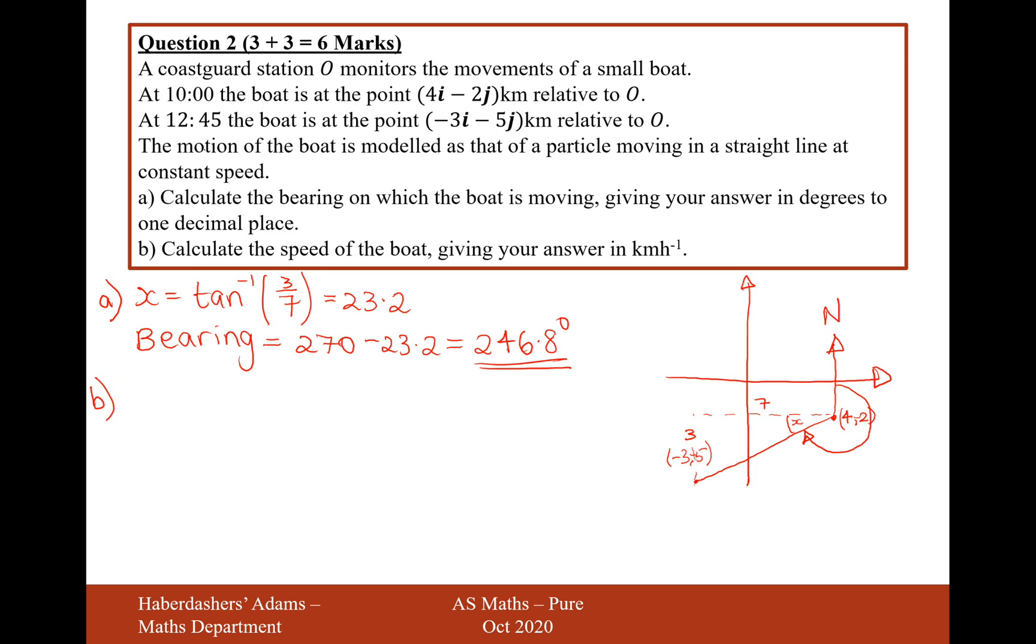And now for part B, calculate the speed of the boat, giving your answer in kilometers per hour. Well, the time, if we do distance divided by time, the time that the boat was traveling for was 2 hours 45 minutes, which is 2 and 3 quarters of an hour, so it's 2.75 hours.